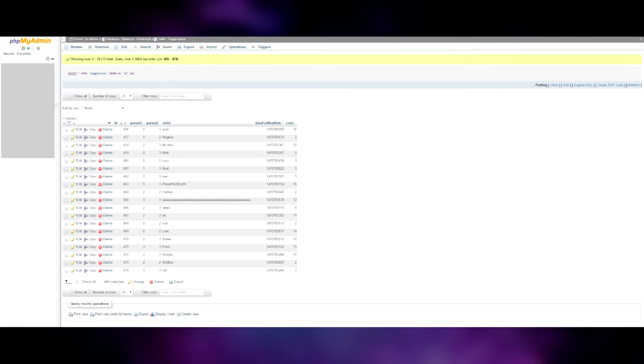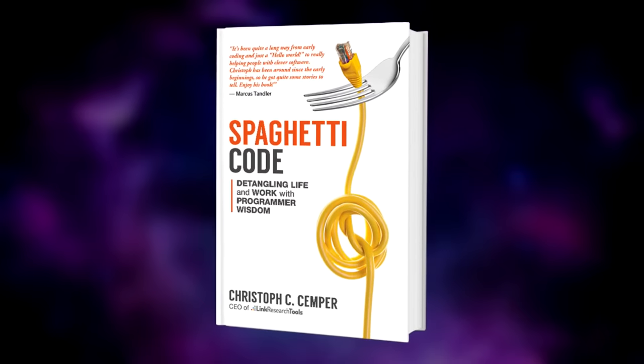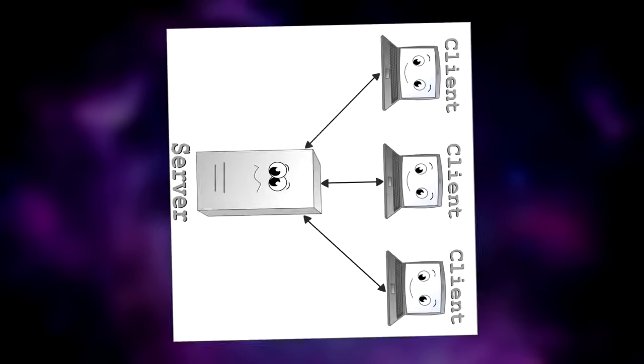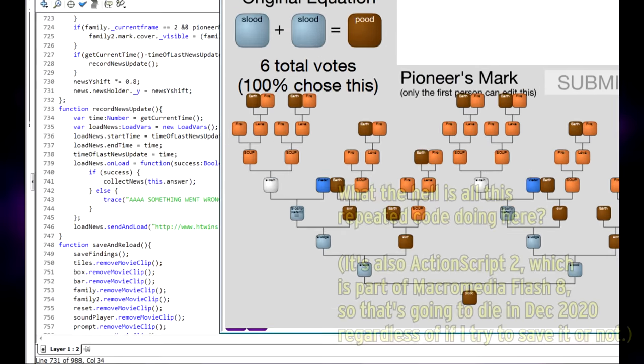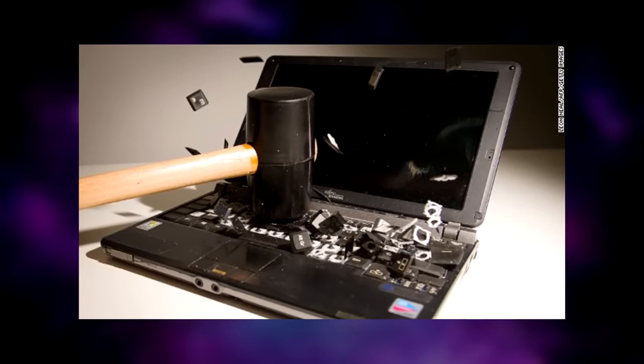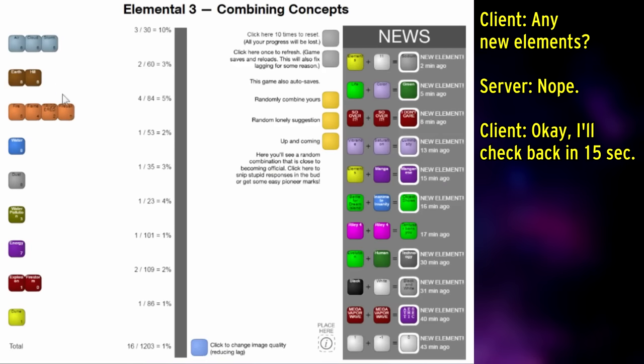Anyway, anybody who's ever worked with collaborative multiplayer games knows that it can be a giant mess of clients talking to servers talking back to clients in unreliable, hacked together ways. Well, I coded Elemental 3 really badly, breaking a bunch of fundamental networking principles, such as requiring users to do busy waiting for news updates of new elements.